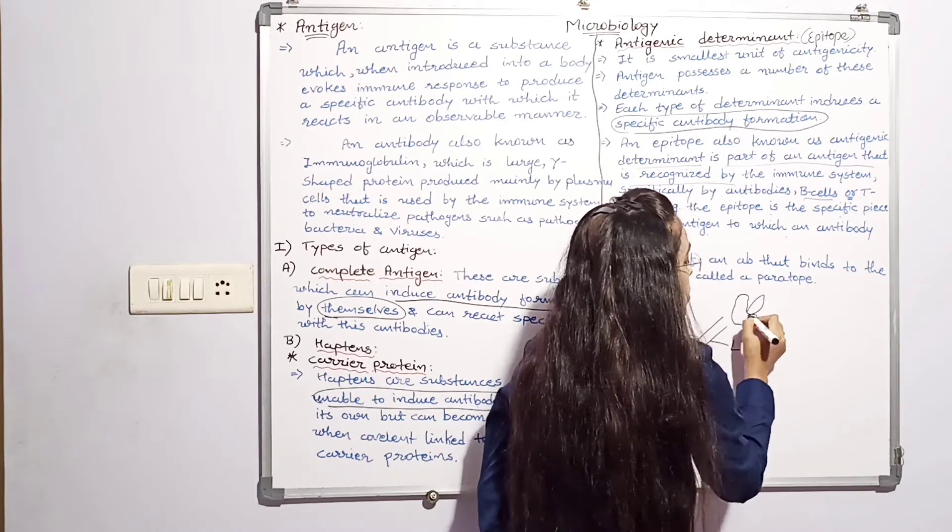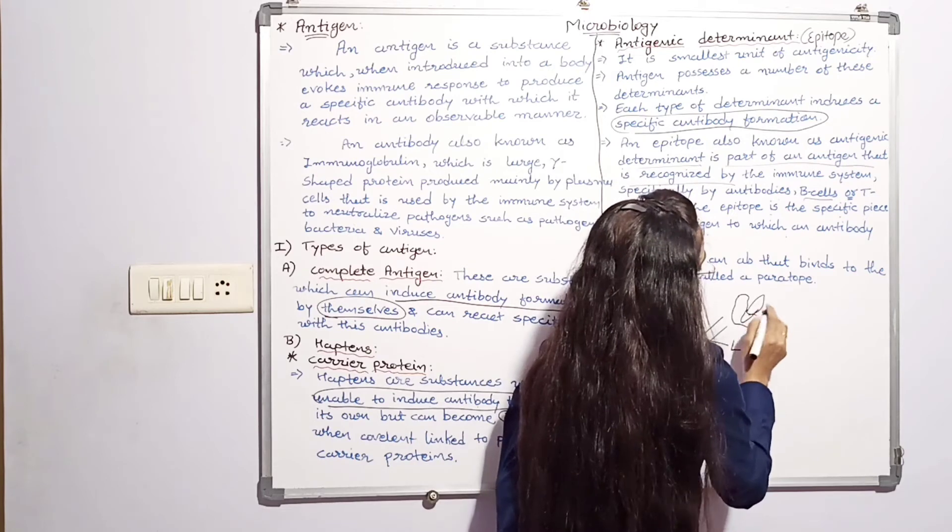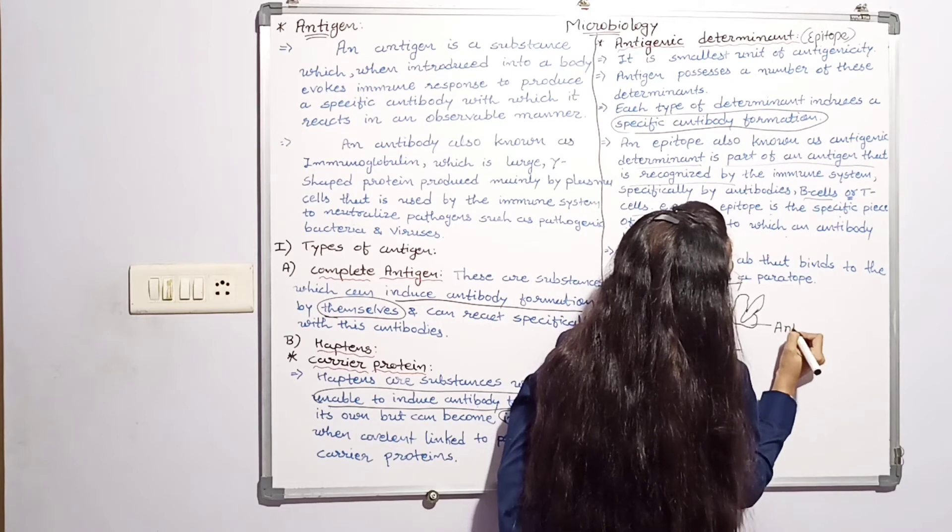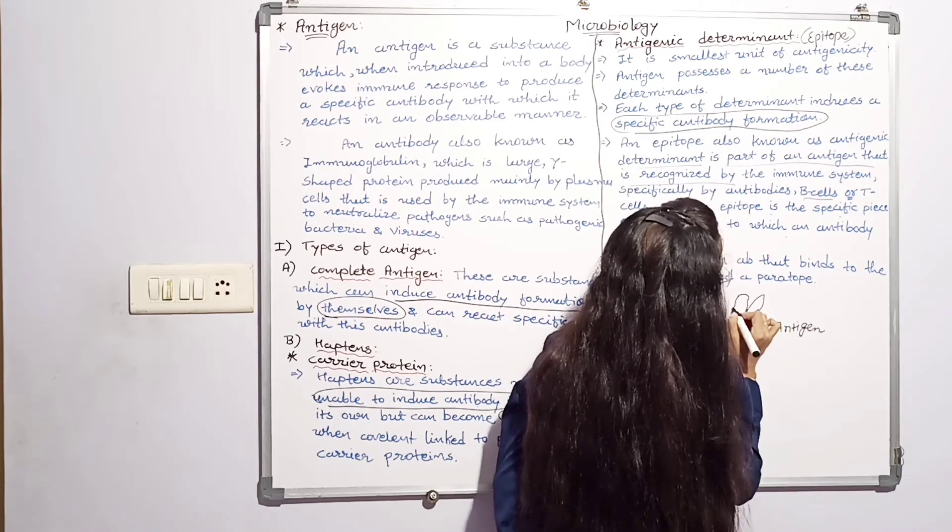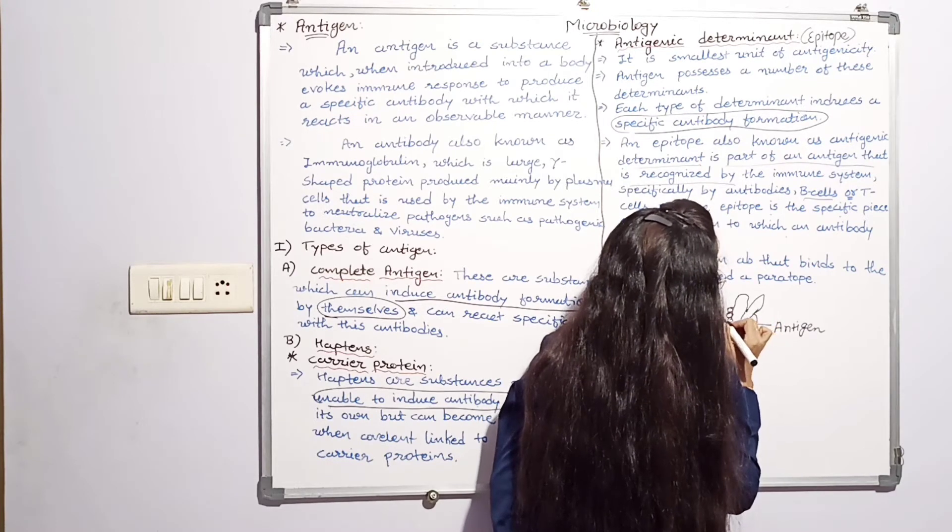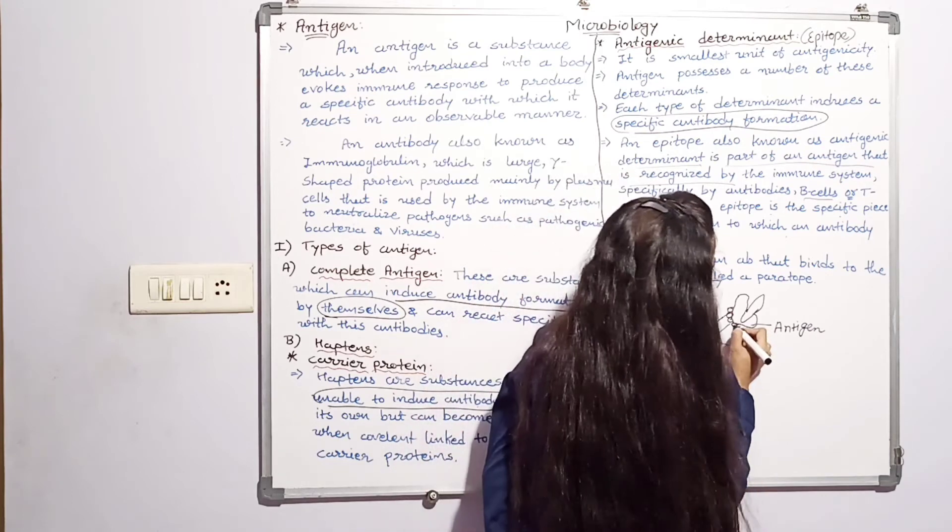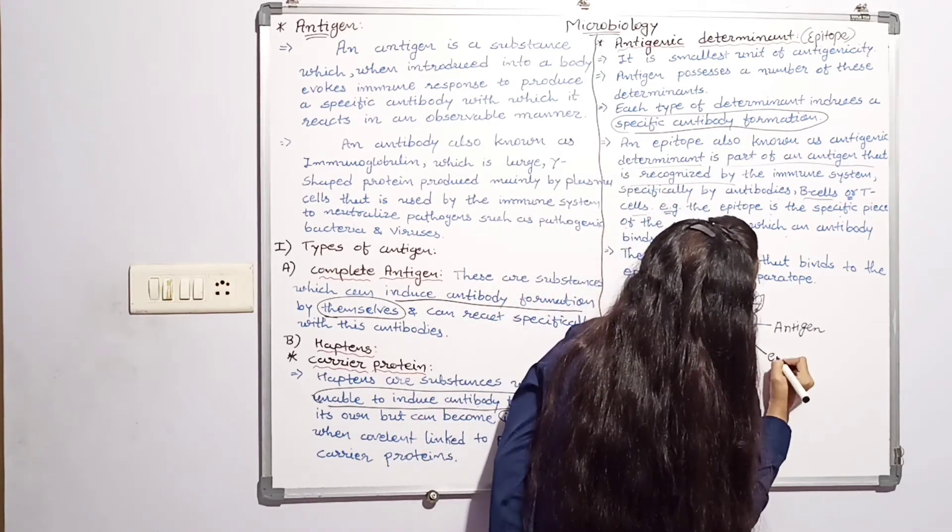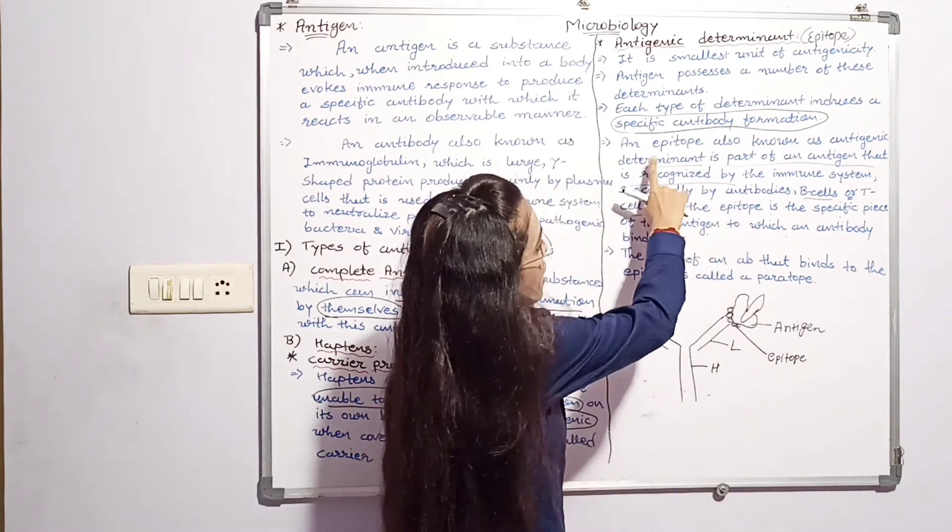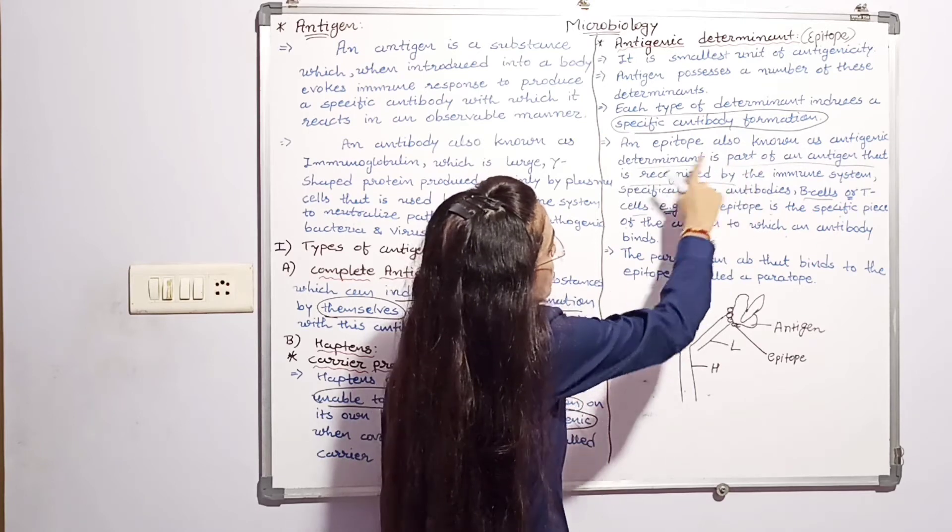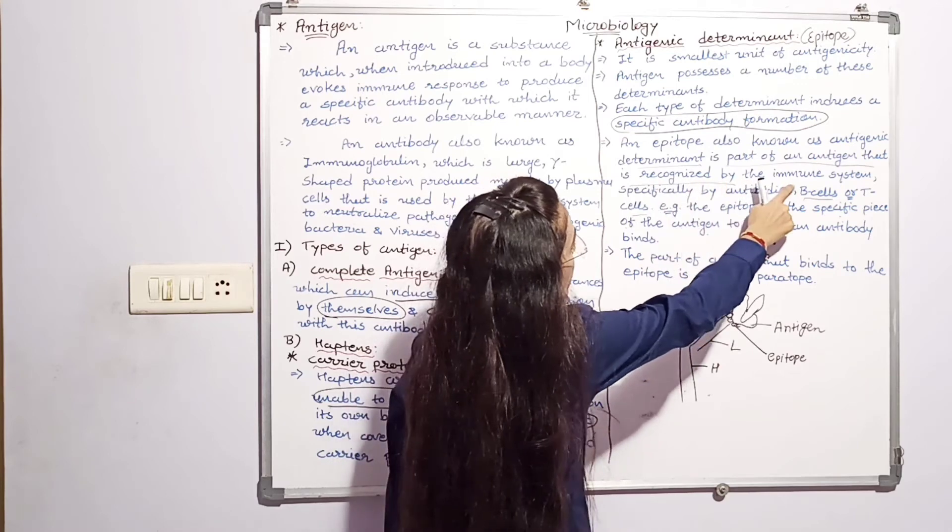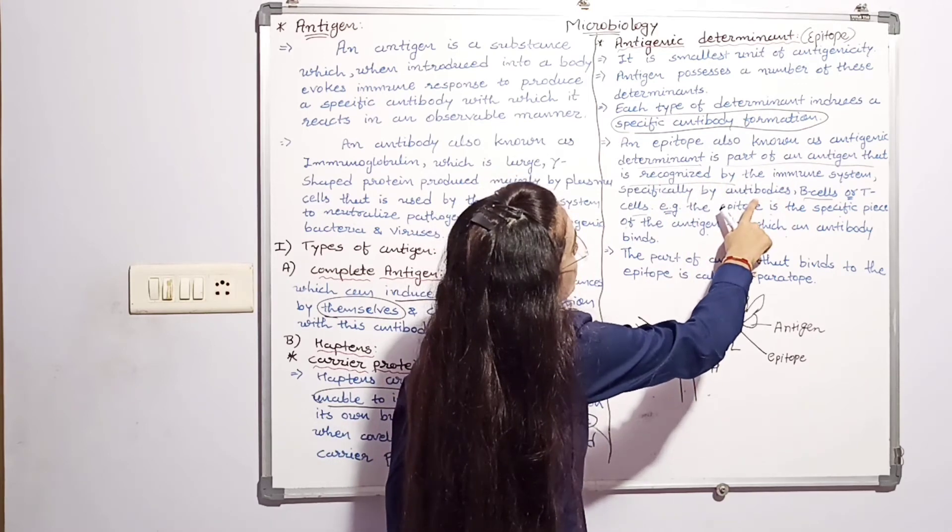The antibody binds to the epitope. An epitope is also known as antigenic determinants. It is a part of an antigen that is recognized by immune system, specifically by antibody.